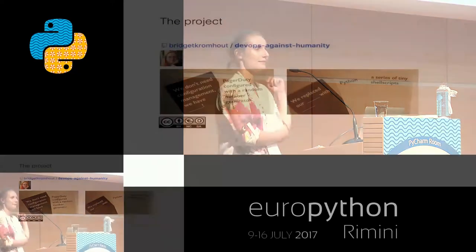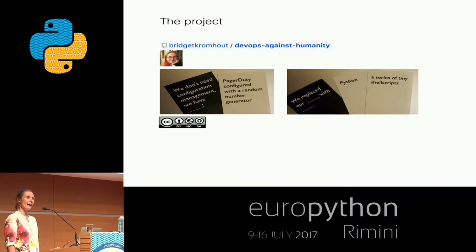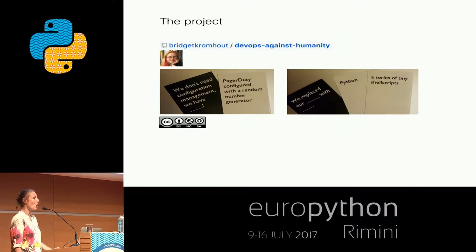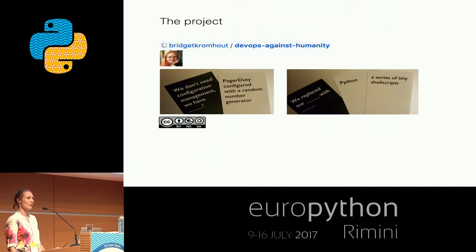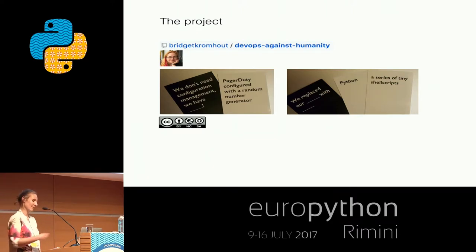I implemented a sample project called Draw DevOps Against Humanity. It is based on a card game, DevOps Against Humanity. In this game you need to draw cards and create funny sentences about development and operations. All sentences, phrases, and words as well as card templates are available in an open source repository under the Creative Commons license. But now let's have a look at the Draw DevOps Against Humanity project.